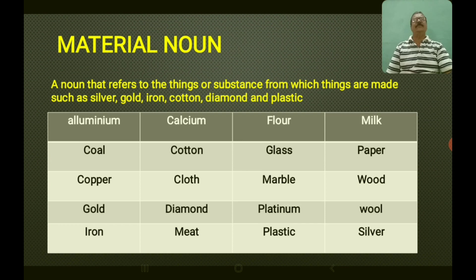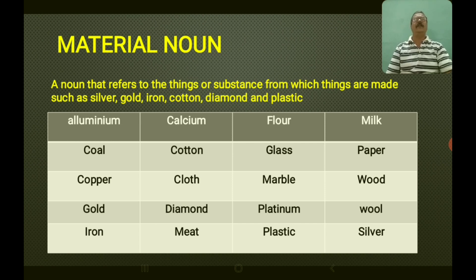The last type is material noun — a noun that refers to substances from which things are made. Examples include: silver, gold, iron, cotton, diamond, plastic, aluminium, coal, copper, calcium, cloth, marble, platinum, milk, paper, wood, wool, glass, meat, and flour. They are all called material nouns. Remember, there are five types of nouns.